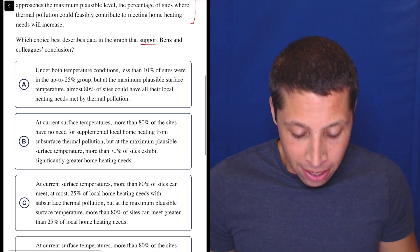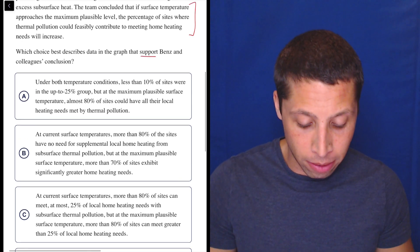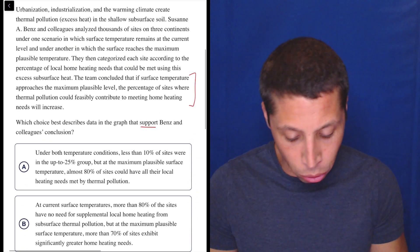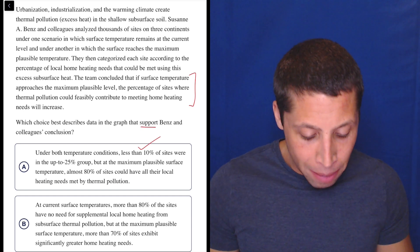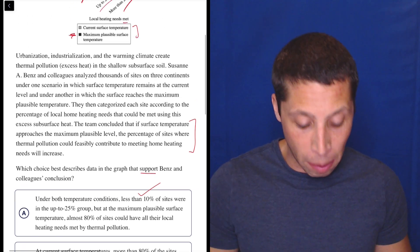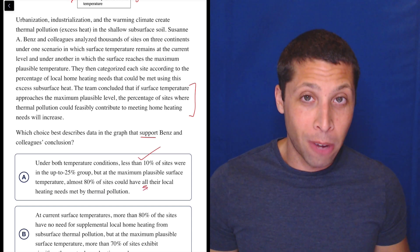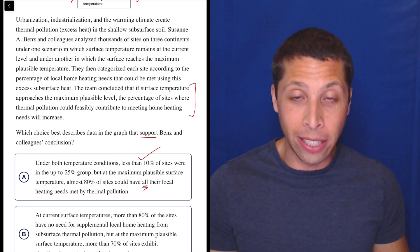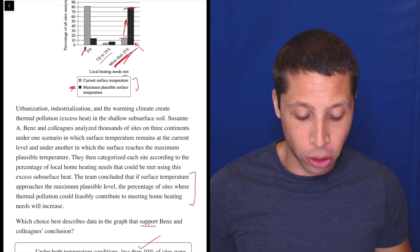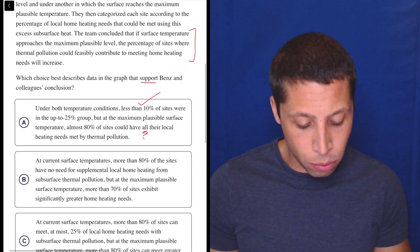Let's take a look. Under both temperature conditions, less than 10% of sites were in the up to 25% group. Let's check that out. Less than 10% of sites were in the up to 25% group. That seems right. So yes, but at the maximum plausible surface temperature, almost 80% of sites could have all their local heating needs met by thermal pollution. And you might be going, Oh yeah, look, 80% seems pretty good, but nope. That's the one word that does it all. It does not say they could have all of their local heating needs met by thermal pollution. It says they could have more than 25% of their heating needs met by thermal pollution. So that's different, right? More than 25% could be 26%. That's not all. So this is wrong because of that one word.